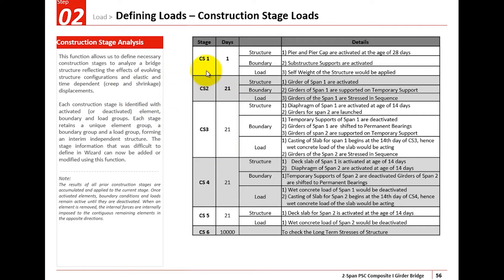In total we have 6 construction stages for this bridge. In CS1, the duration is 1 day where the pier and pier cap would be activated at the age of 28 days, and the substructure supports would be activated. In CS2, the girders of span 1 would be activated and then span 1 would be supported on the temporary supports, and prestressing would be done for the girders of span 1.